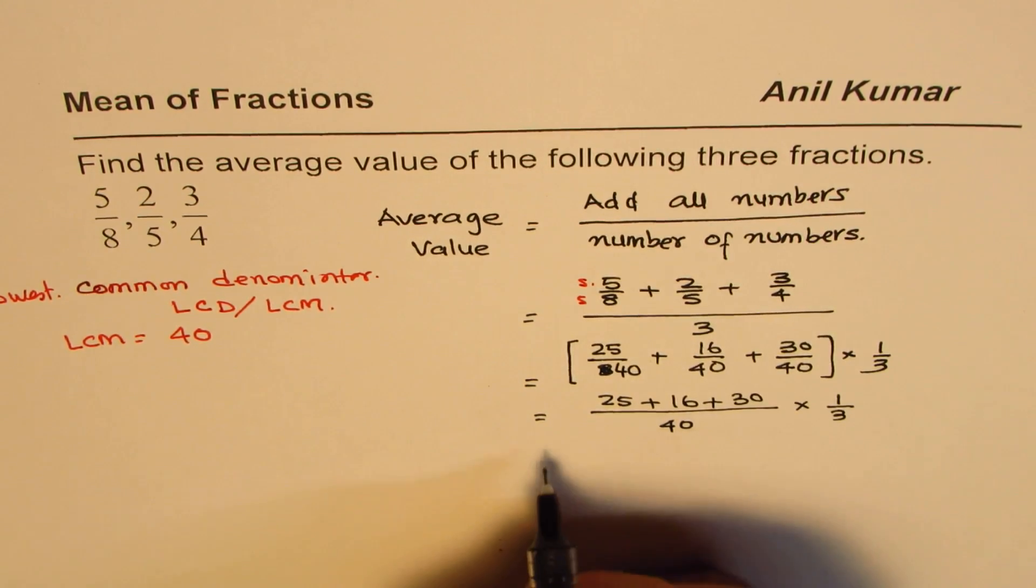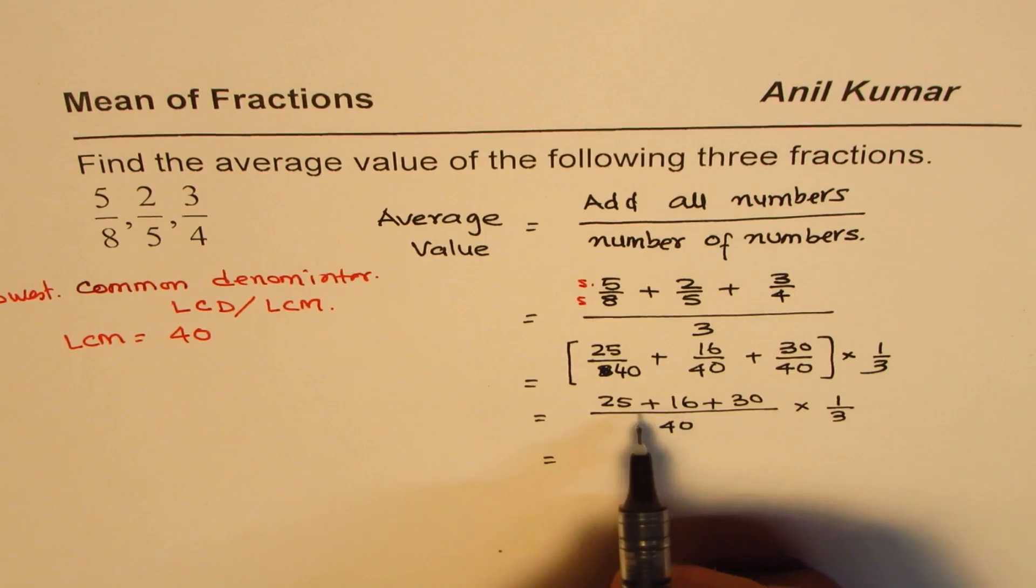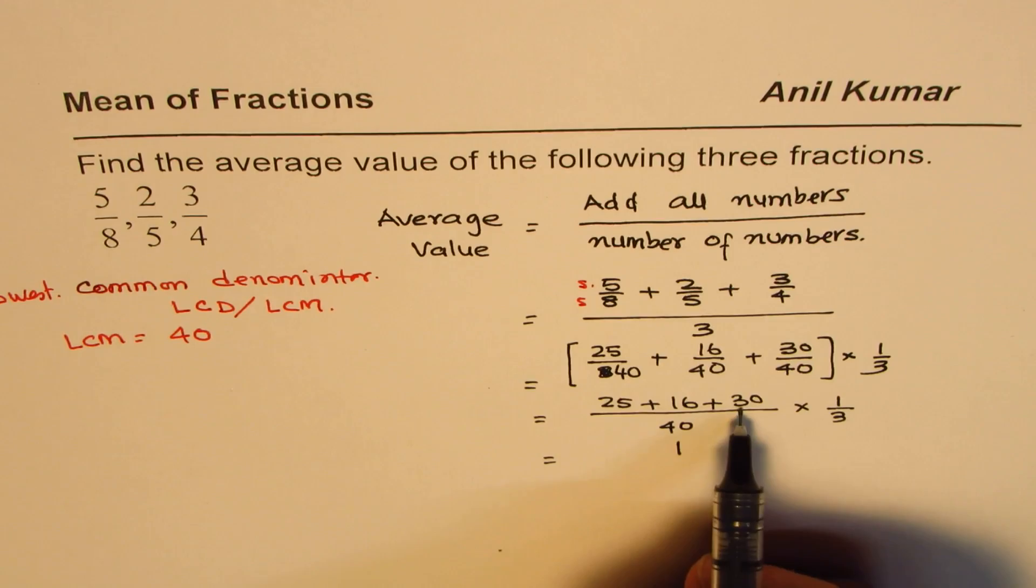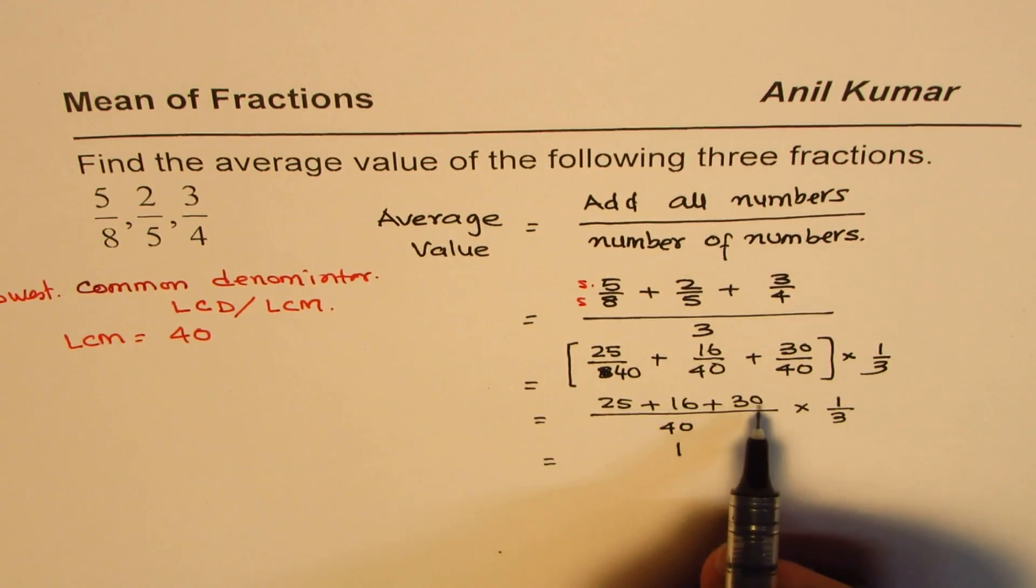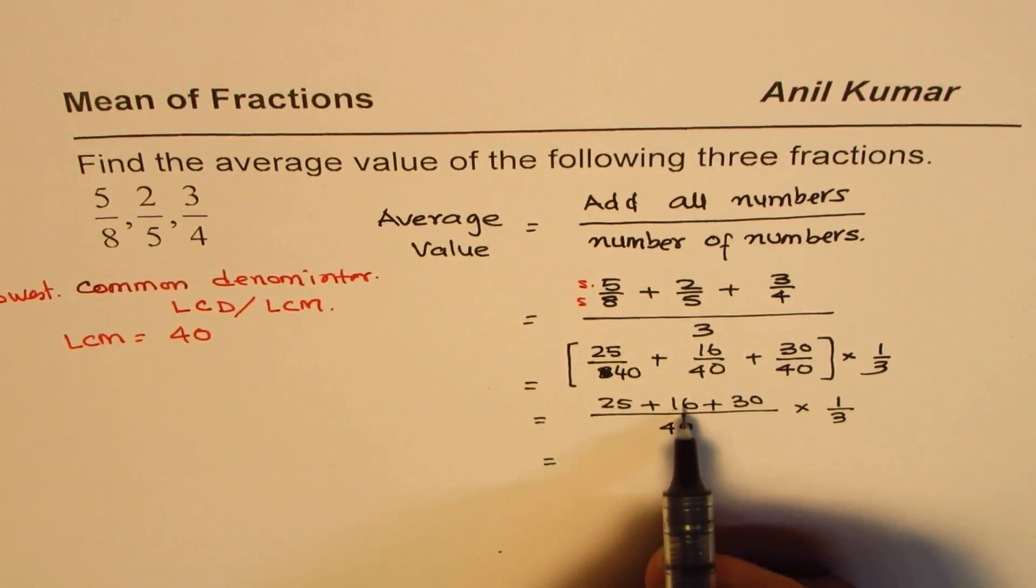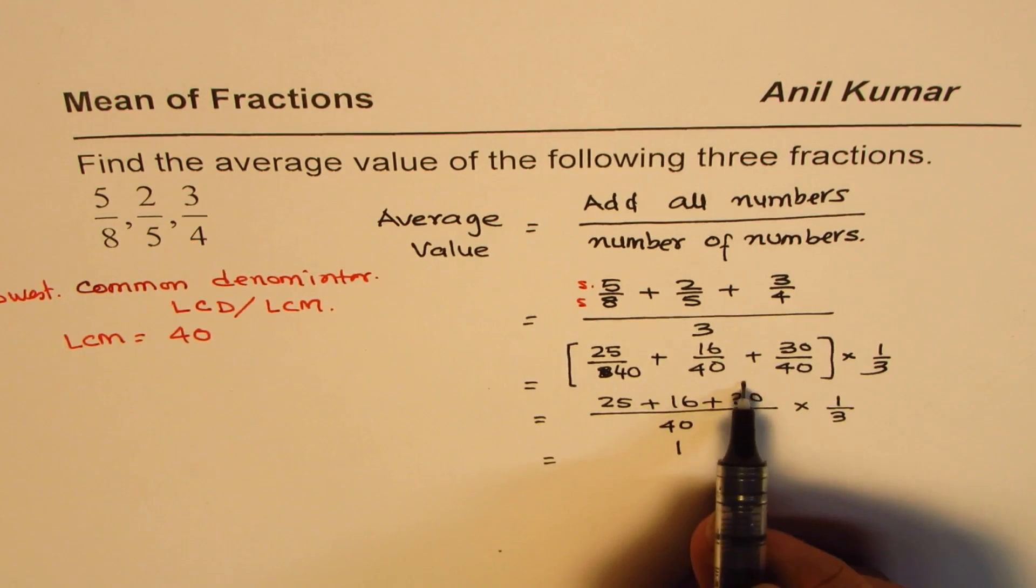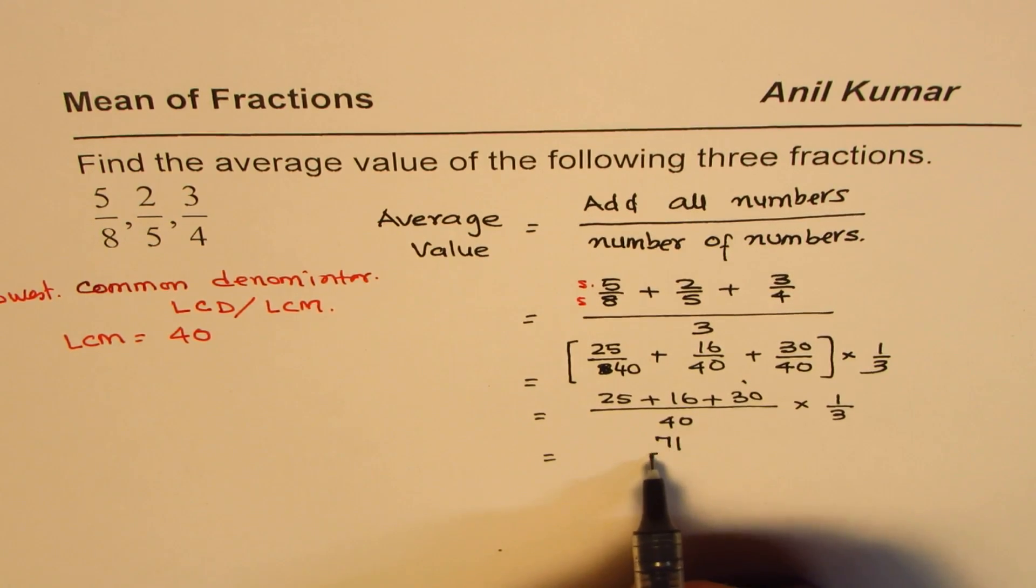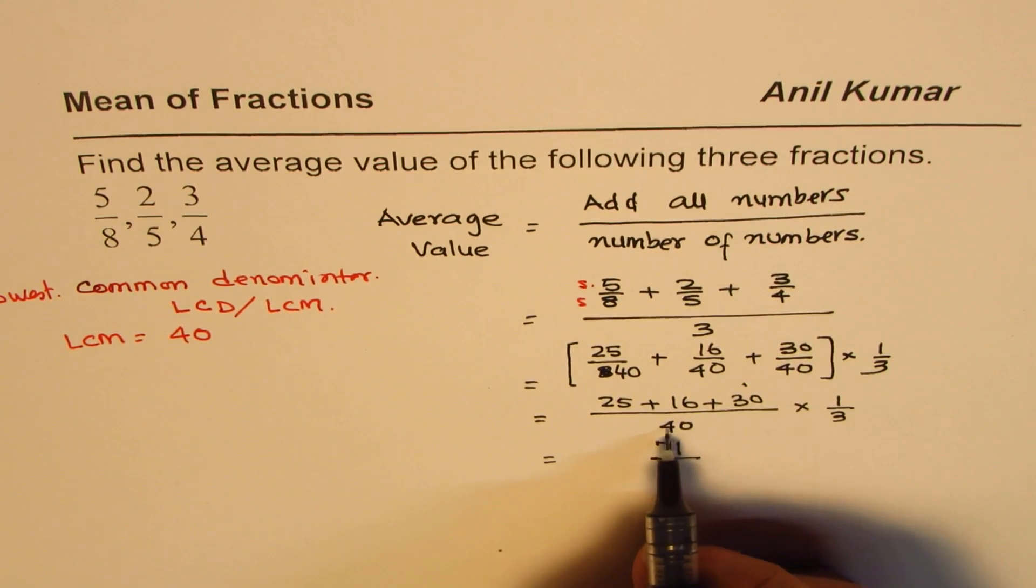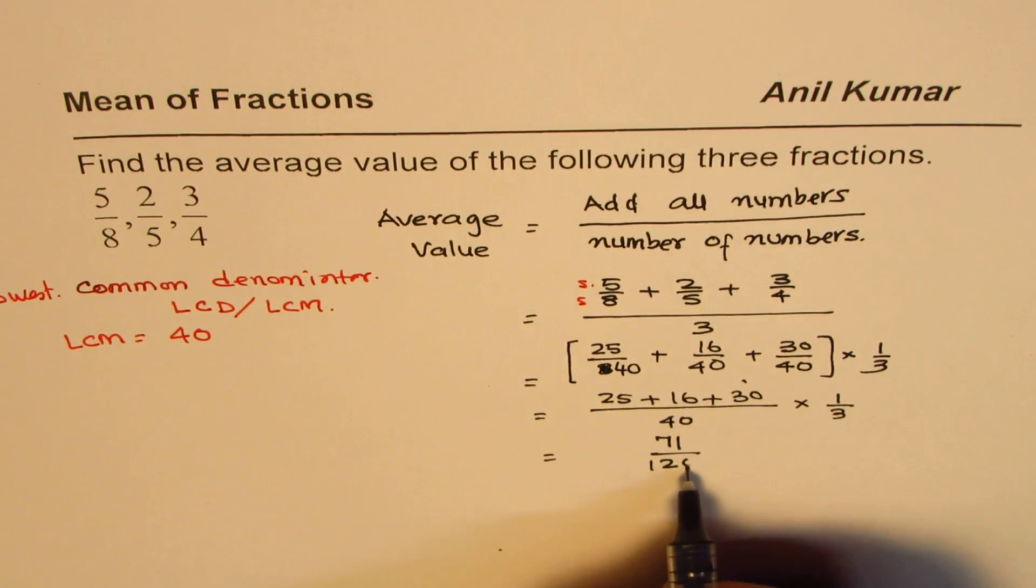So it is 25 plus 16 plus 30, which we are going to write in the numerator. 6 plus 5 is 11, so 1, 4, 5, 6, 7. So 71 divided by 40 times 3 is 120, right?